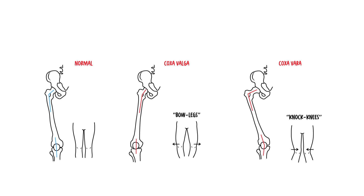In summary, this video covered the anatomy of the femur and its blood supply. The femur is divided into proximal, shaft, and distal segments. The proximal femur is a common site for femoral fractures. The angle of inclination is an obtuse angle between the long axis of the femoral neck and femoral shaft, averaging 126 degrees in adults. Abnormality in this angle can lead to coxa vara or coxa valga.